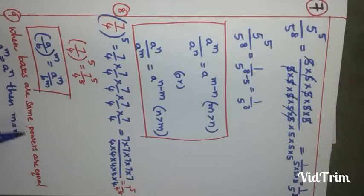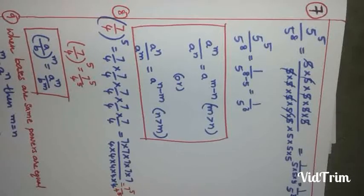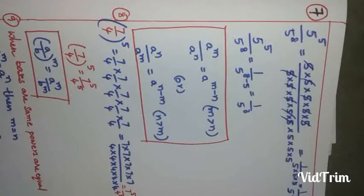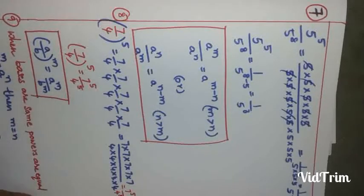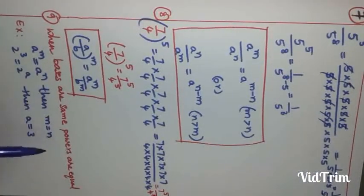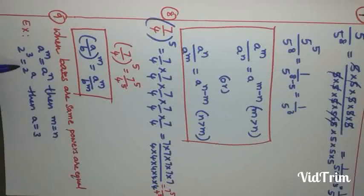When bases are the same and powers are equal — for example if a^m = a^n, then m = n. We use this when both bases are equal to find unknown powers. For instance, if 2^3 = 2^a, since bases are the same (both 2), we can find a: a equals 3. In general, when a^m = a^n with the same base, then m = n. So here bases are 2 and powers are 3, giving a equals 3.